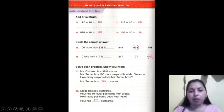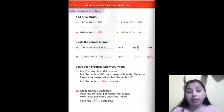Solve each problem, show your work. Mrs. Clarkson has 325 crayons. Mrs. Turner has 100 more crayons than Mrs. Clarkson. How many crayons does Mrs. Turner have? Mrs. Turner has 425 crayons. 325 plus 100 equals 425.